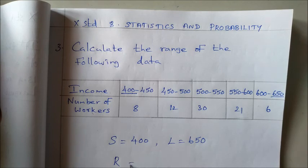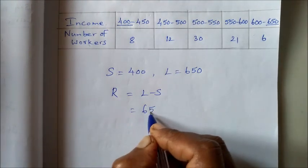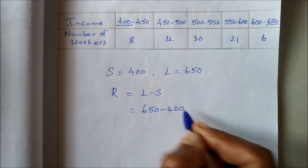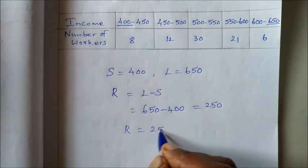So R, range, R is equal to L minus S. So 650 minus 400, which is equal to 250. So range is equal to 250.